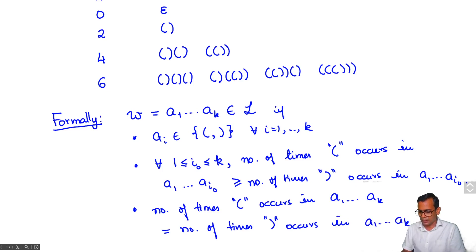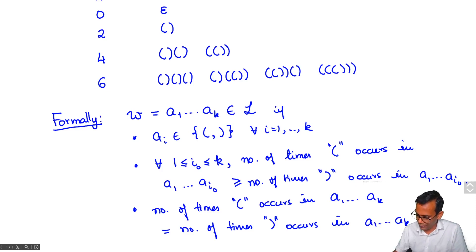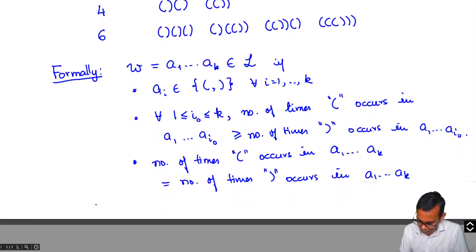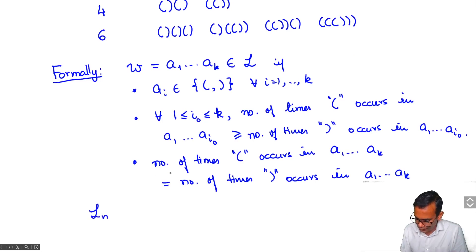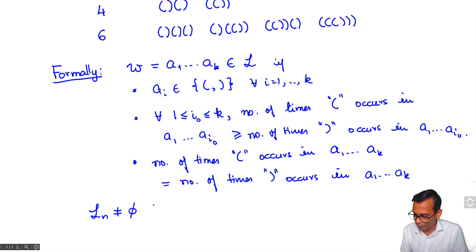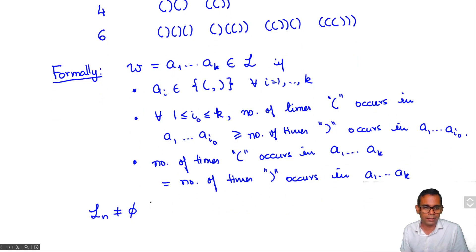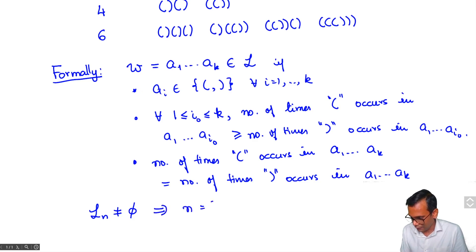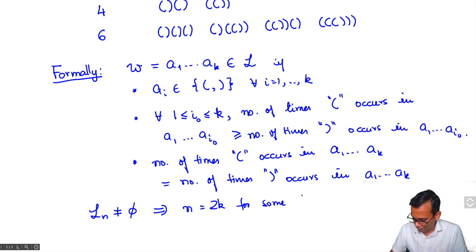These conditions describe the language of Dyck words. As we have already observed, the last axiom implies that if there is a Dyck word of length N, then N must be even — equal to 2k for some non-negative integer k.